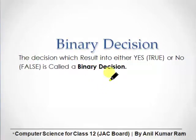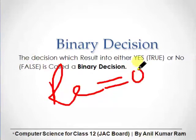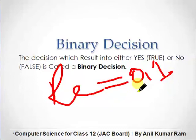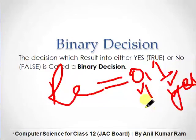This means that the results come to you as either 0 or 1. 0 means false, and 1 means true. Which means 1 is yes and 0 is false, or no.